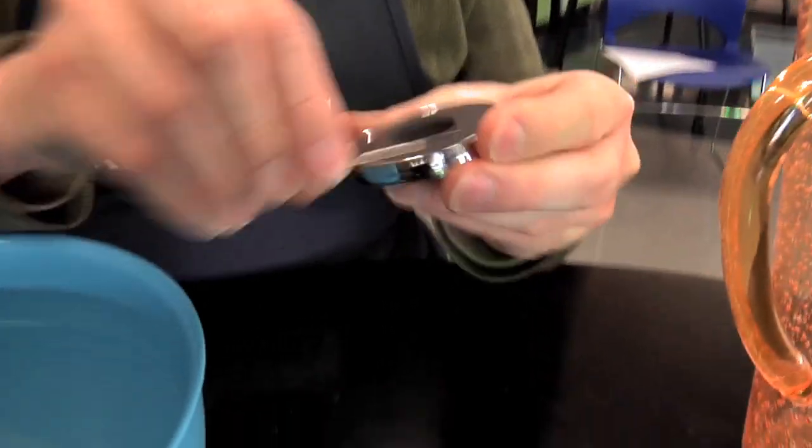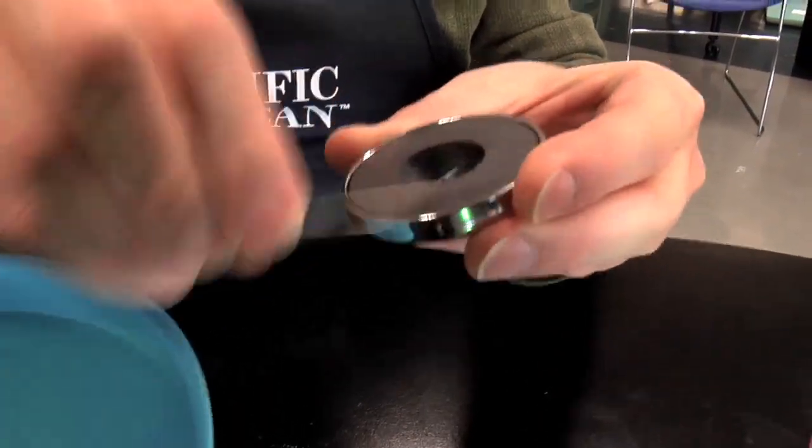Then take the needle and rub it against the magnet 30 to 40 times. Okay, through the magic of editing, it's now about 40 rubs later, and our needle has become magnetized.